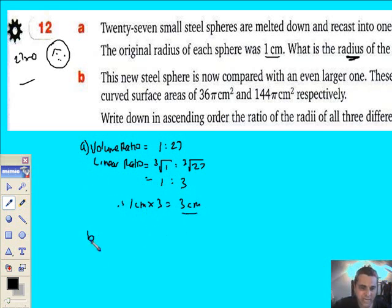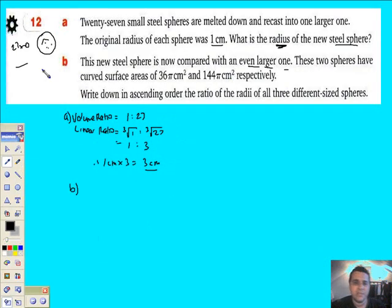Now, part B is really complicated. This new sphere is now compared with an even larger one. So now I've got something like this—an even larger one.